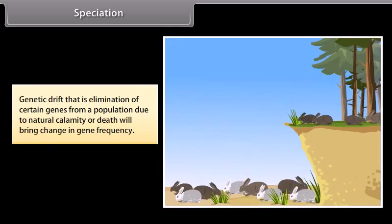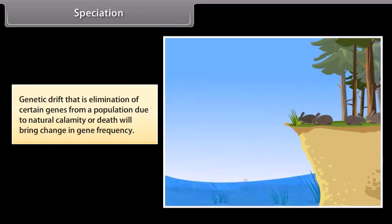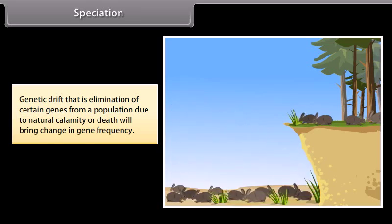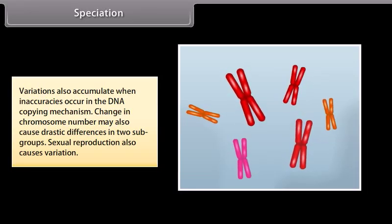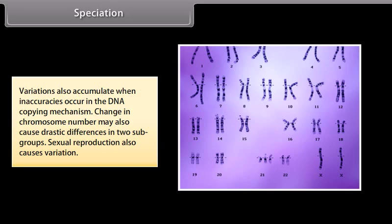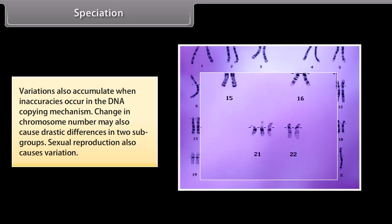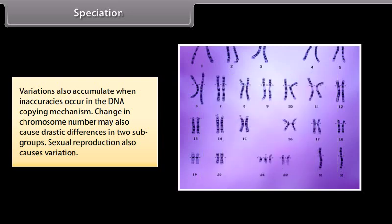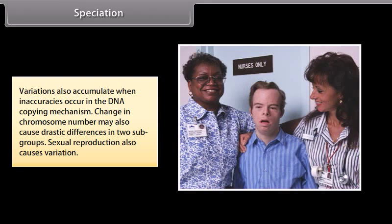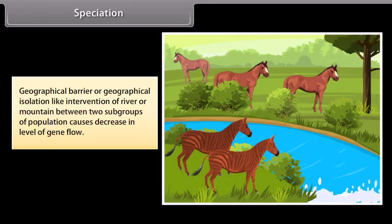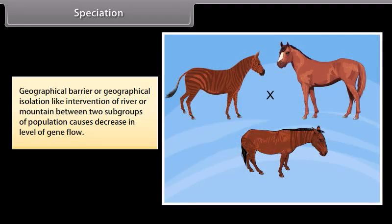Genetic drift — the elimination of certain genes from a population due to natural calamity or death — will bring change in gene frequency. Variations also accumulate when inaccuracies occur in the DNA copying mechanism. Change in chromosome number may also cause drastic differences in two subgroups. Sexual reproduction also causes variation. Geographical isolation, like the intervention of a river or mountain between two subgroups, causes a decrease in the level of gene flow.